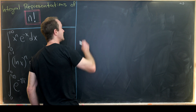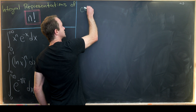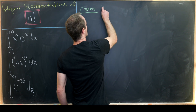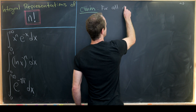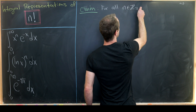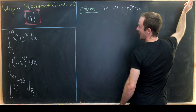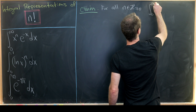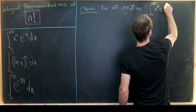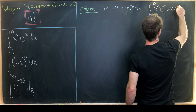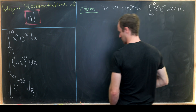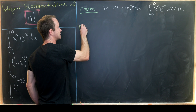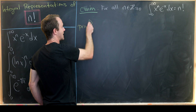Let's make our claim: for all n which are non-negative integers, we have the integral from zero to infinity of x to the n, e to the minus x dx, is equal to n factorial. We're going to prove this by mathematical induction.